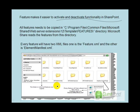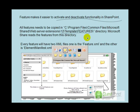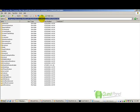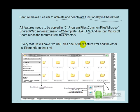Before we move ahead, let's look at some fundamental things about features. First, features need to be copied into the templates features directory. Every directory in there is a feature. Second, there are two XML files: feature.xml and element manifest.xml. Using these two XML files, the SharePoint runtime understands the name of the feature, what it should do, and where it should be activated.